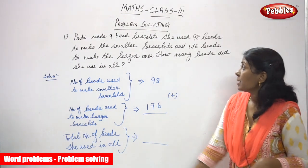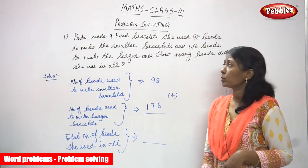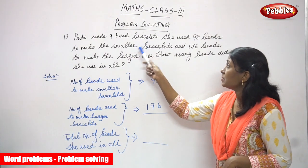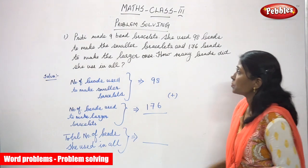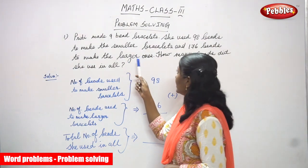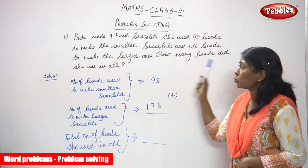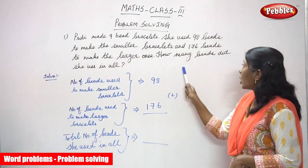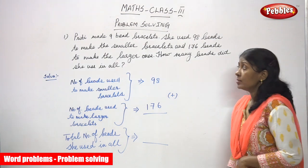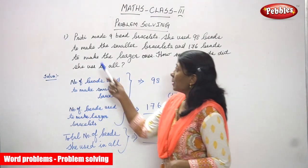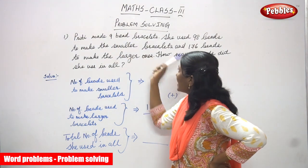Now we are going to see a problem-solving question. It's a word problem. So Preeti made 9 bead bracelets. She used 98 beads to make the smaller bracelets and 176 beads to make the larger ones. So how many beads did she use in all?